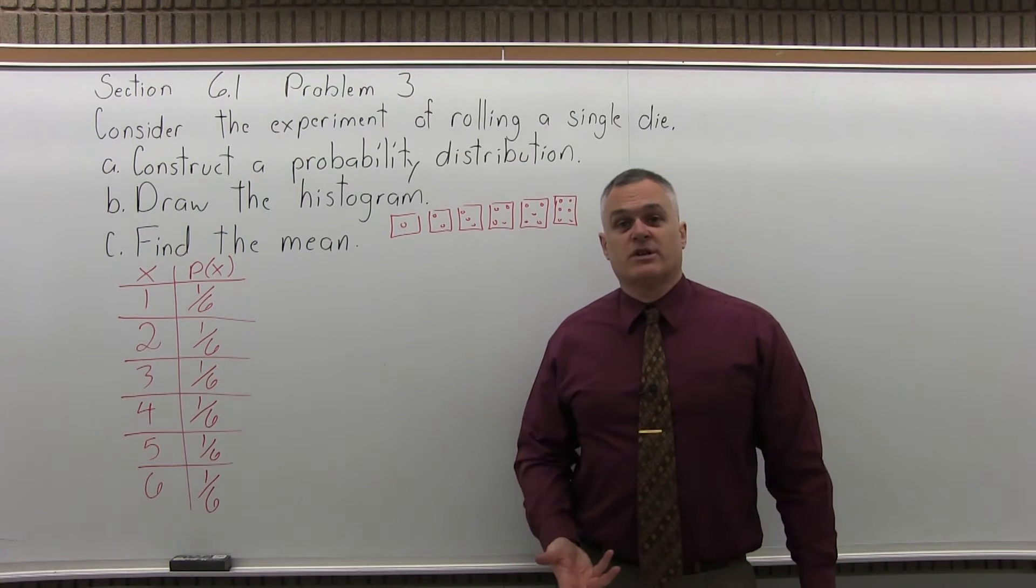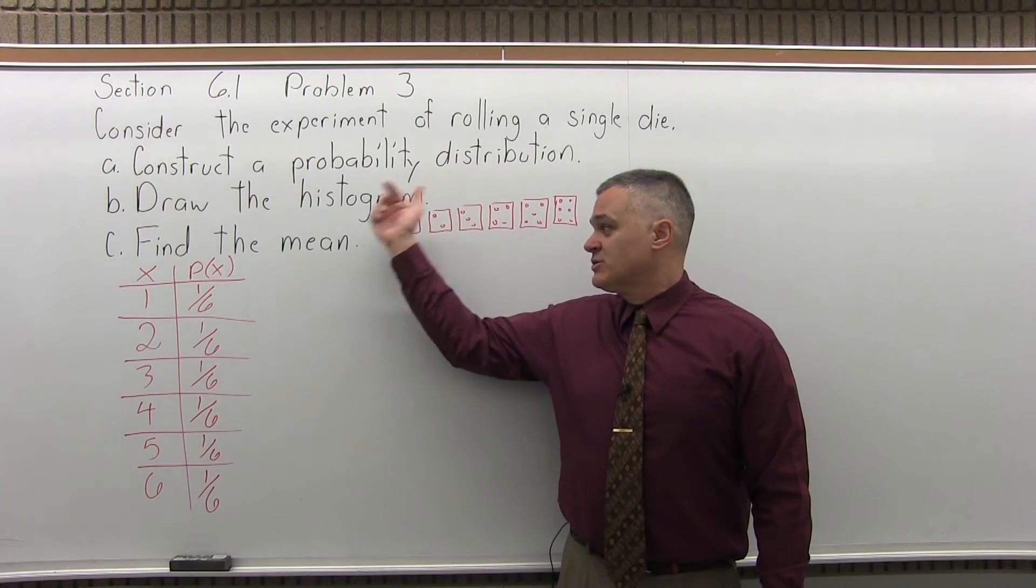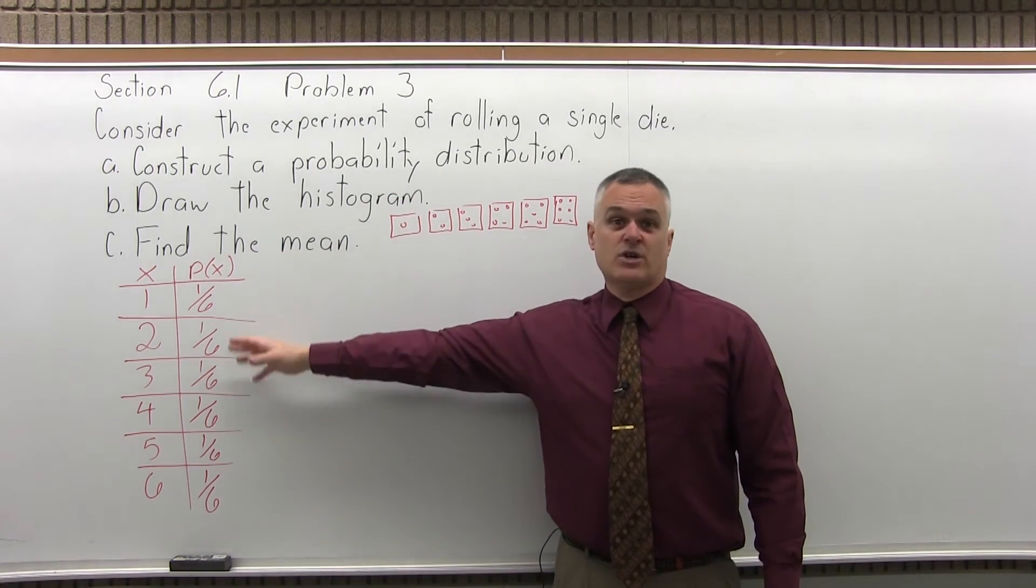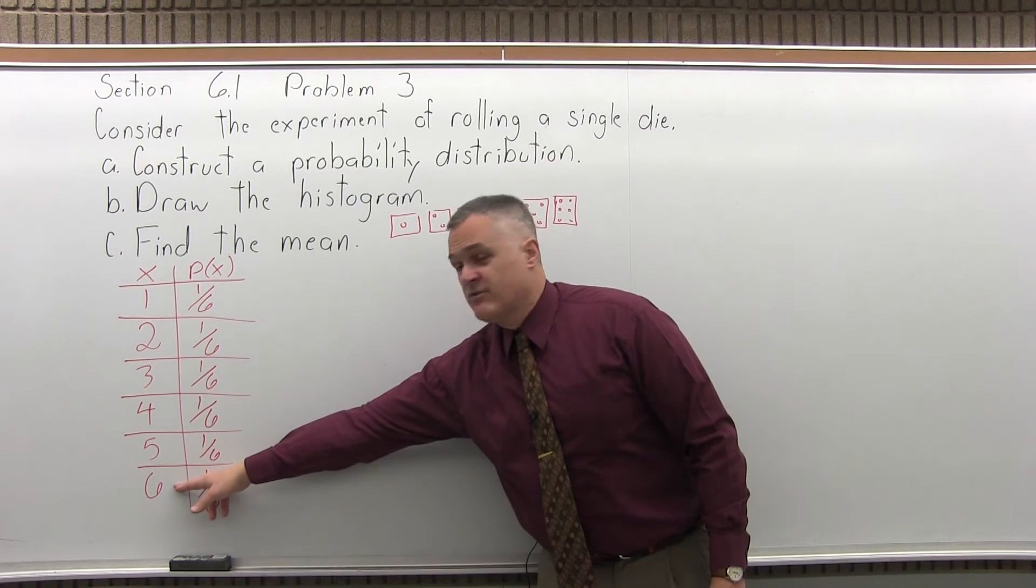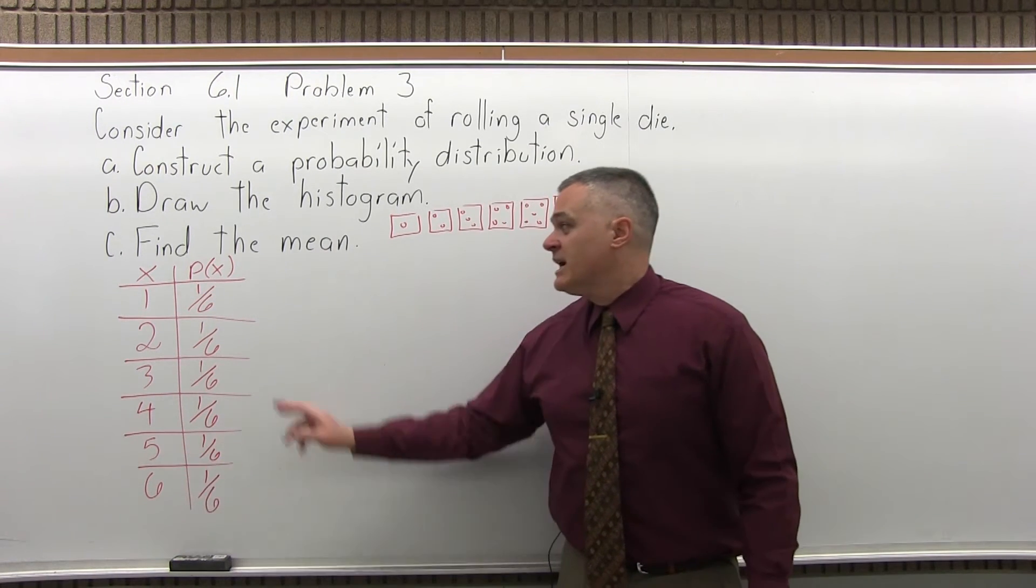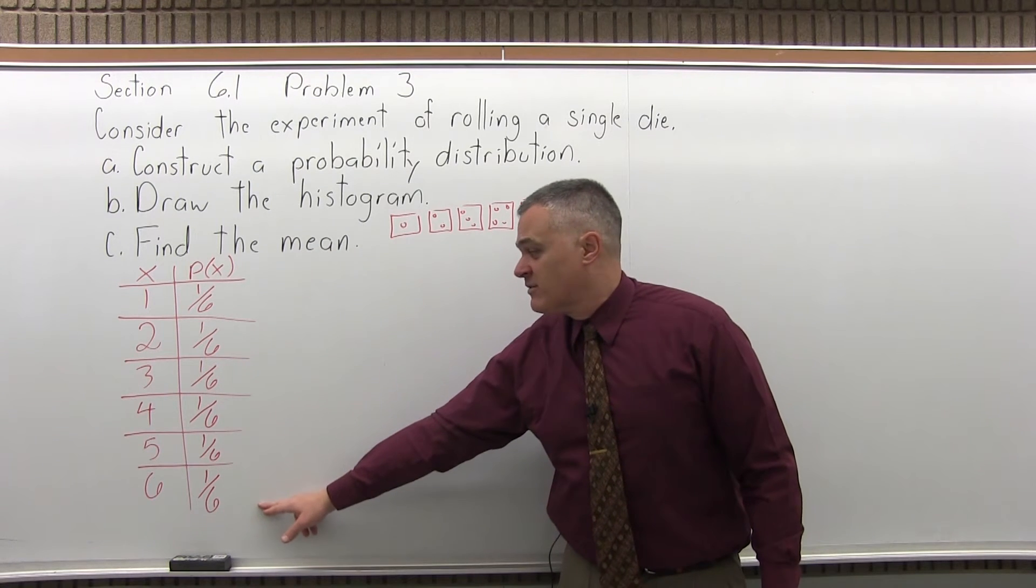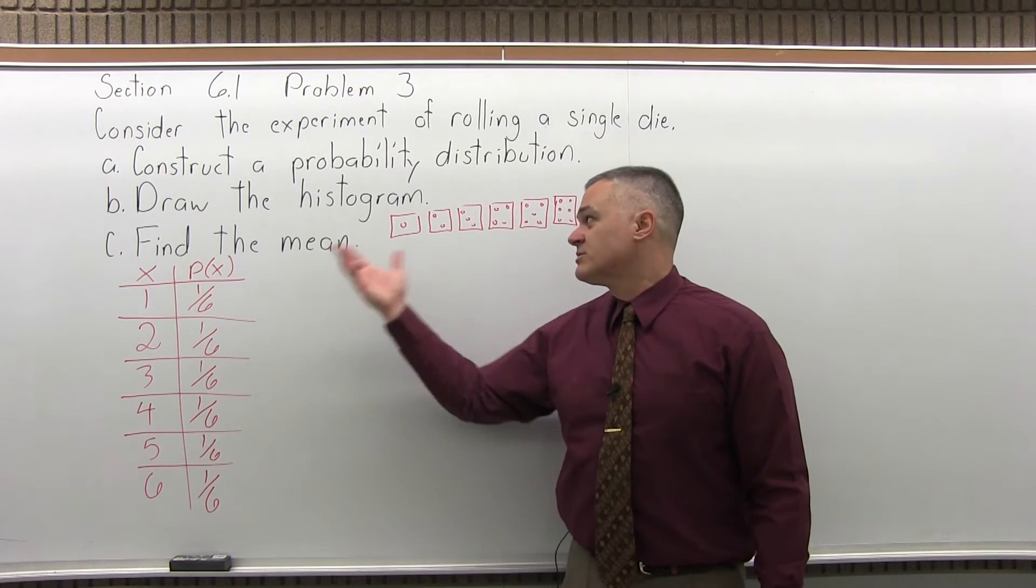So that's part A. Construct a probability distribution. So there it is, a chart with two columns. The first column lists every possible outcome you can have for your experiment, 1 through 6. And the second column lists the probabilities of everything in the first column. So each roll is 1 over 6.